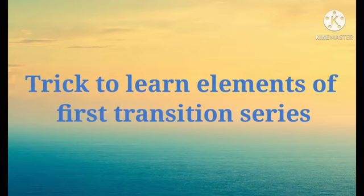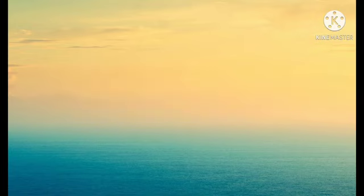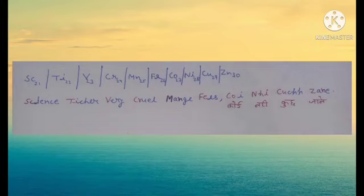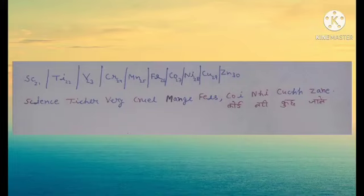Now students, we see a trick to learn about the elements of this first transition series. There are 10 elements in this series, and the mnemonic trick is: 'Science Teacher Very Cruel, Mange Fees, Koi Nahi Kuchh Jane.' Let me repeat: 'Science Teacher Very Cruel, Mange Fees, Koi Nahi Kuchh Jane.'